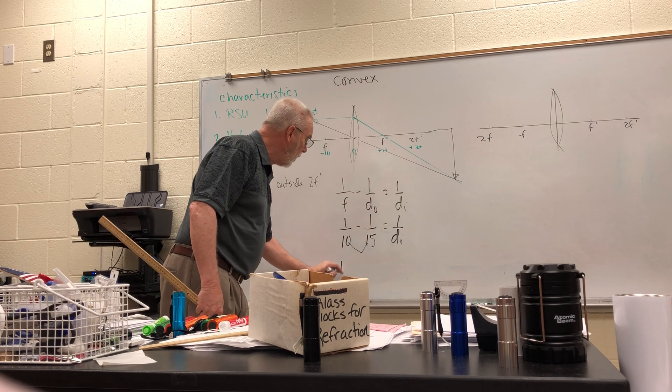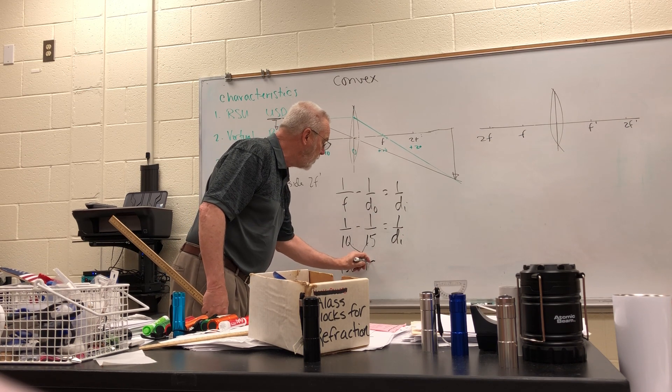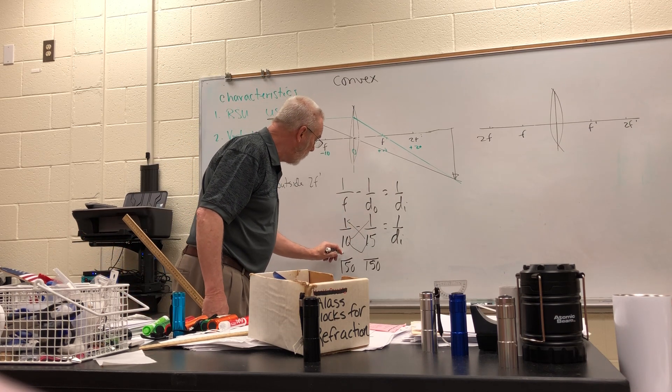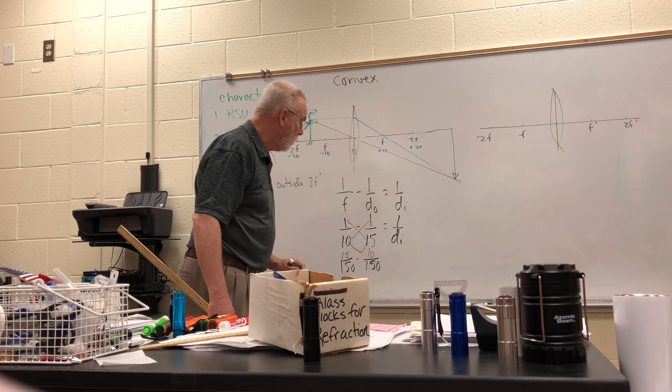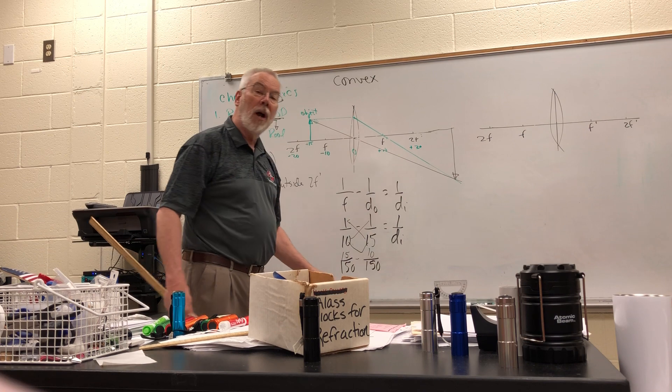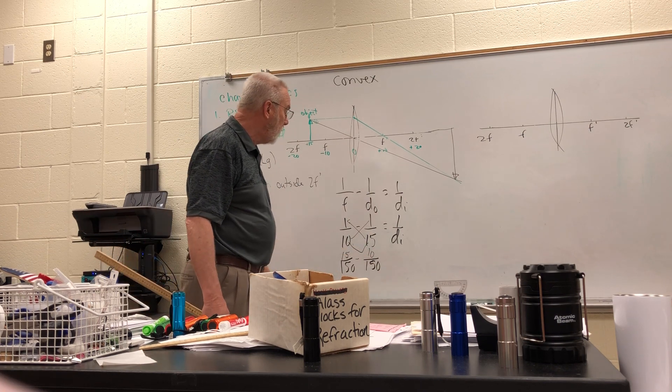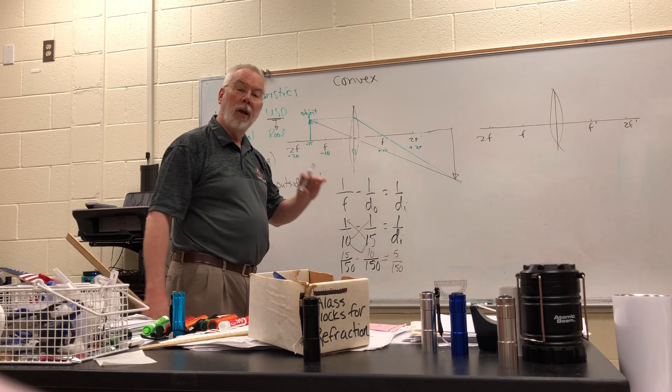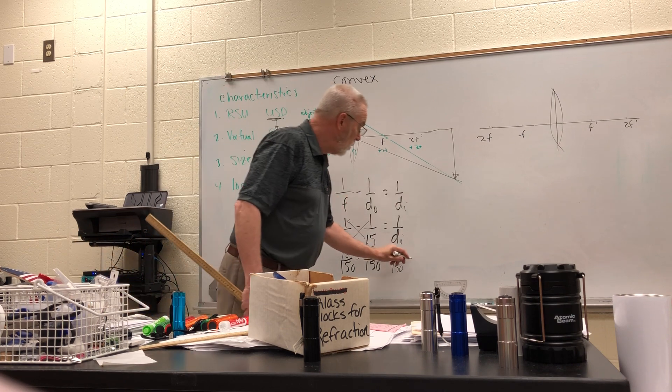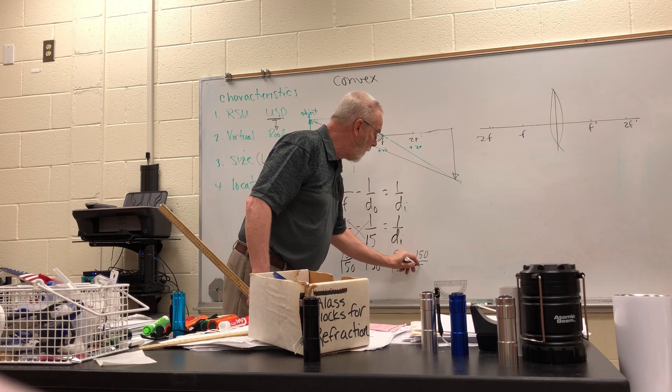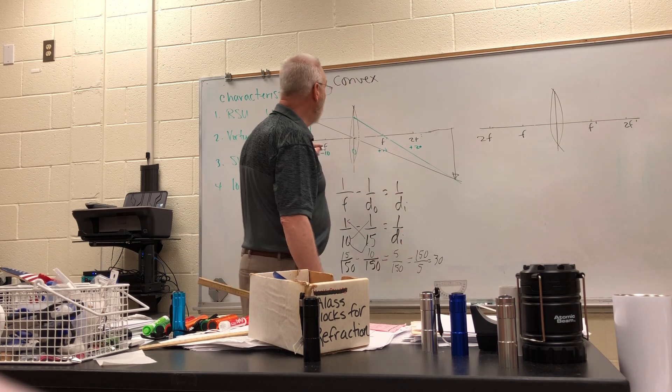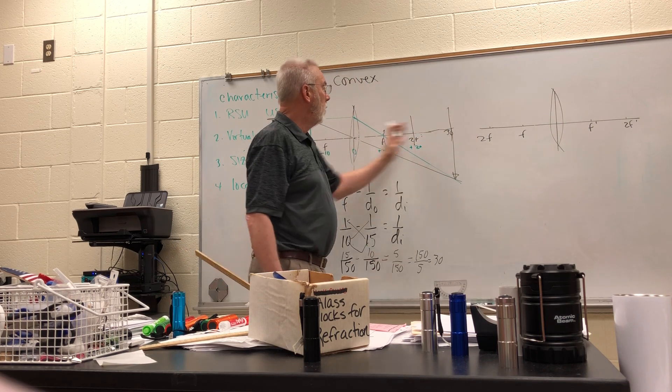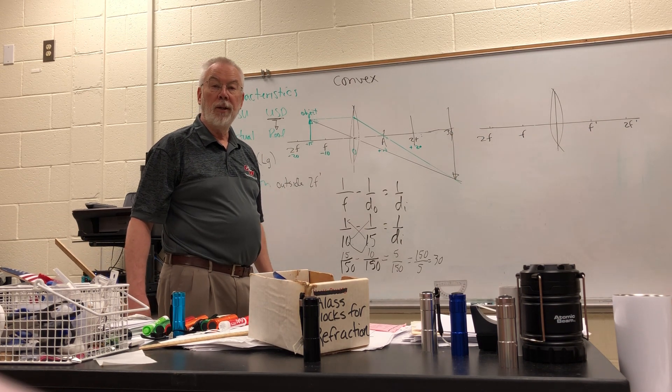You should remember that what we did was we first solve for a common denominator. So we multiply these two together and we get a common denominator of 150. Then we've got 15 here minus 10 here. Since we have a common denominator, we can just subtract and 15 minus 10 is going to be 5. So that answer is going to be 5 over 150. And you'll remember we flip it. So that means it's 150 over 5, which is 30. And if you look at this, that's approximately 30 centimeters from the lens.